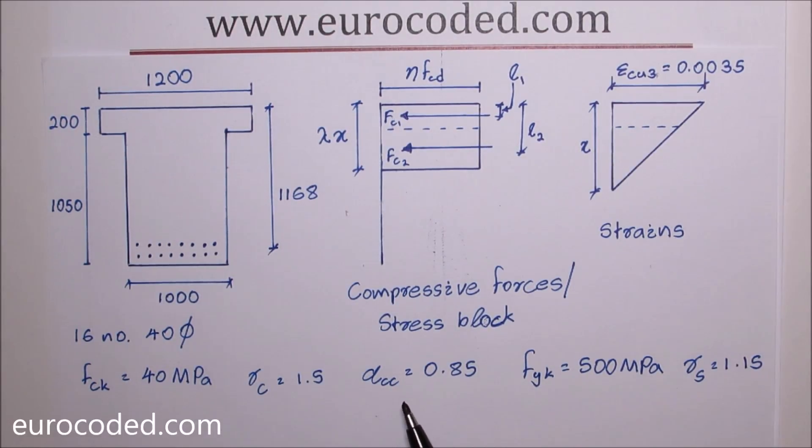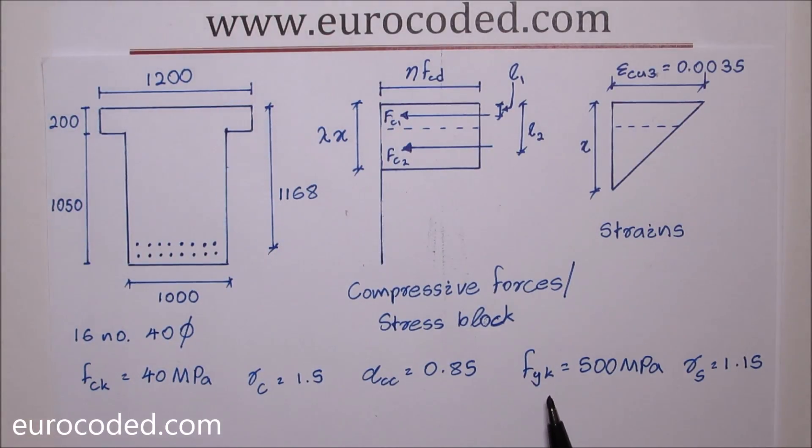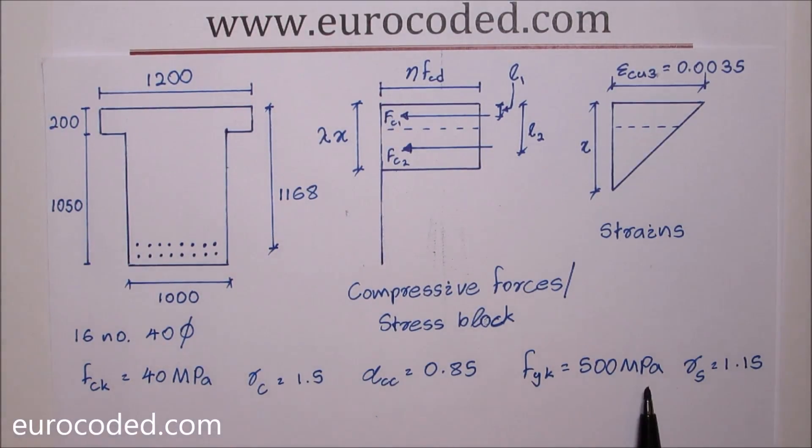We will be using alpha CC as 0.85. For the reinforcement FYK is 500 megapascal and gamma S is 1.15.